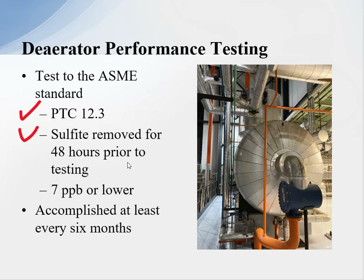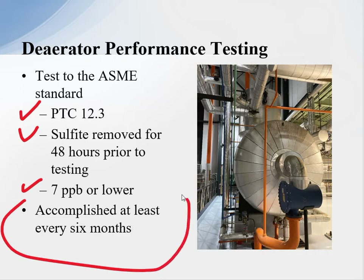We either achieve or do not achieve 7 parts per billion or lower. If the deaerator is running at 7 parts per billion, then we use sulfide to drive the dissolved oxygen close to zero. This test should be done at least every six months. Today, plants have online measurements available, making it a really critical and accessible test.